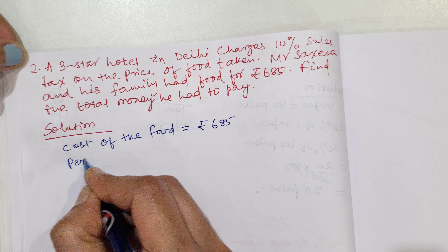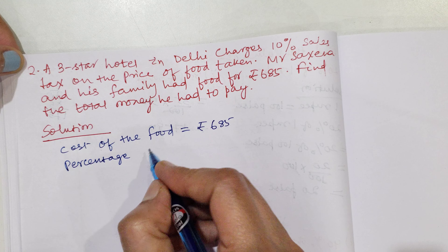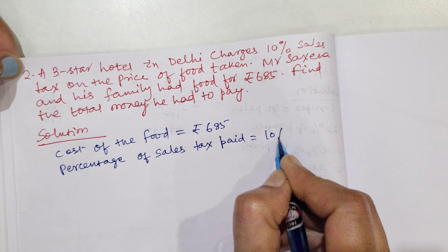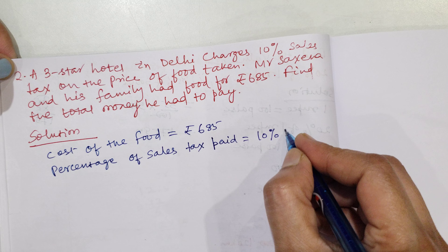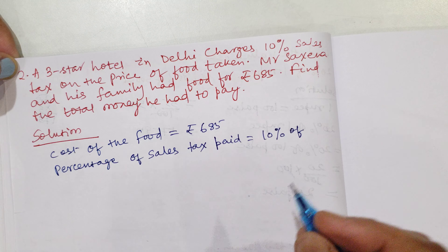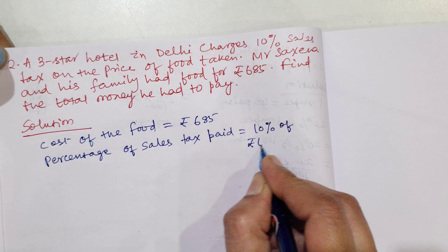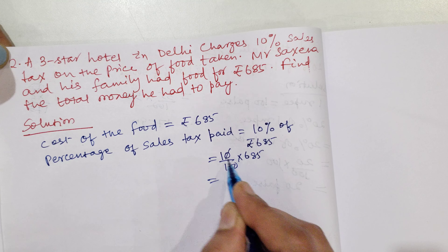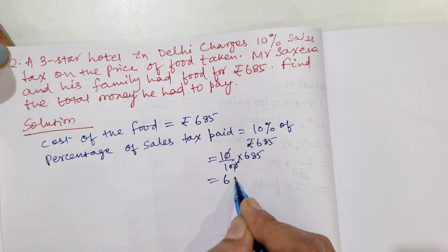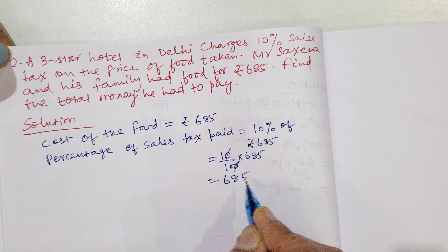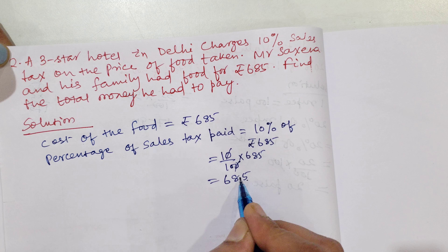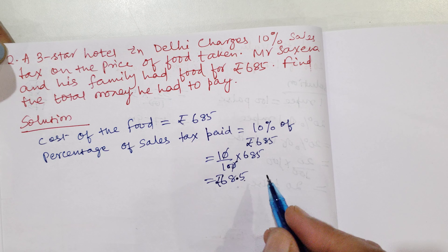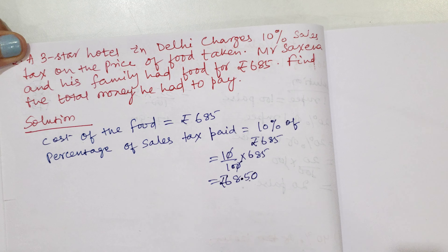Amount of sales tax paid = 10% of Rs. 685 = 10/100 × 685 = 685/10. Here there is one zero at the back, so we count one place and put a decimal point, because it is in rupees. So here is 0 change — the decimal is placed accordingly.